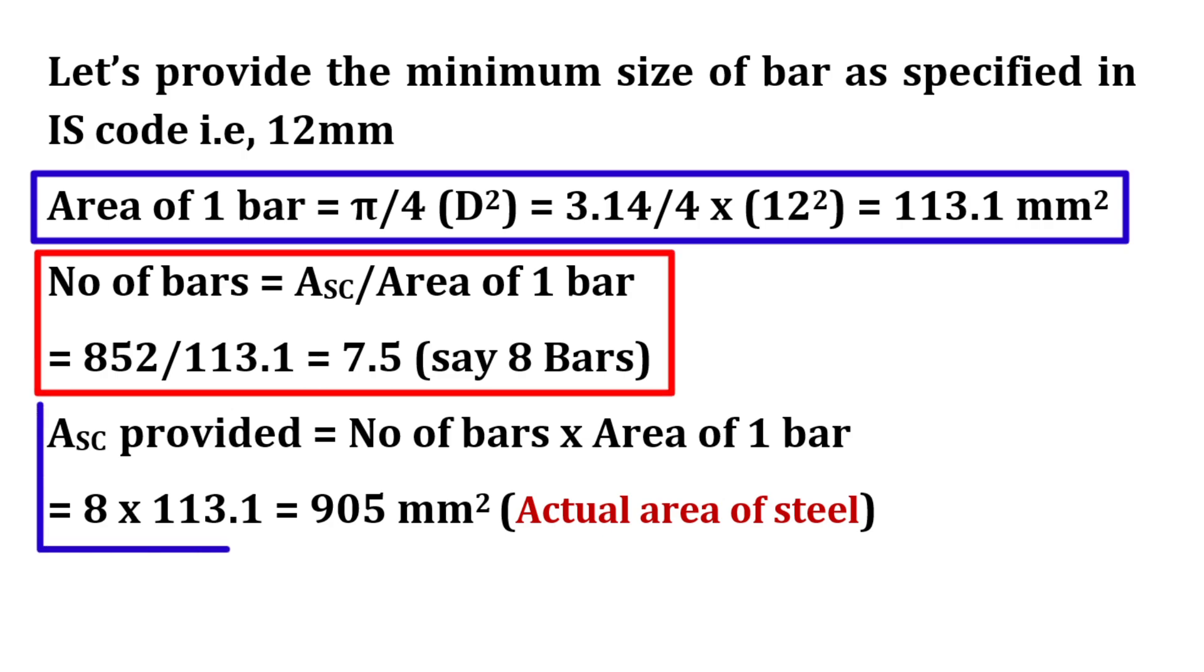Again, Asc provided will be equal to number of bars into area of 1 bar. Number of bars is calculated as 8, area of 1 bar is 113.1 mm square. On substituting these values, area of steel provided will be equal to 905 mm square, which is the actual area of steel.